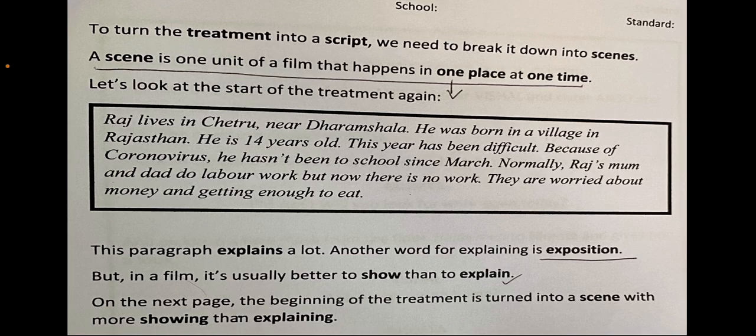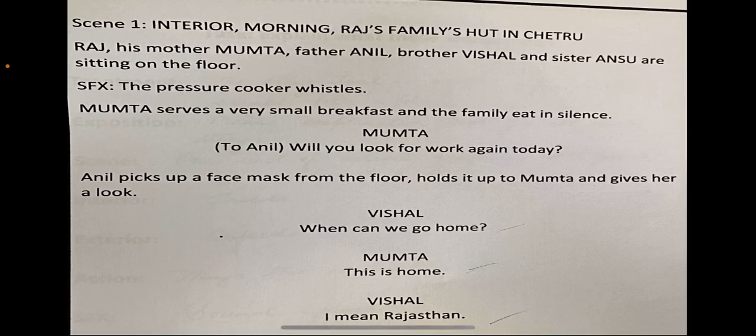Instead of explaining things, we have to show them to the actors who are going to perform from the script. We are going to turn our treatment — our stories — into a script, and for that we need to break the story down into scenes. In this paragraph, everything is only talking about Raj's livelihood at his home, so here we have one scene. Here is an example of how to write a script.